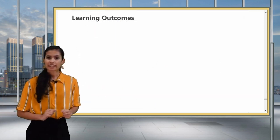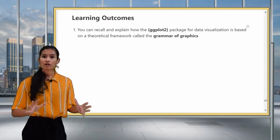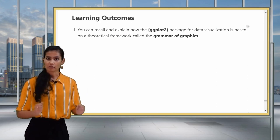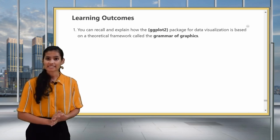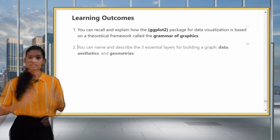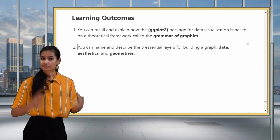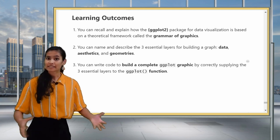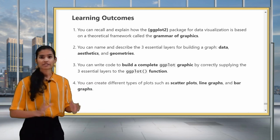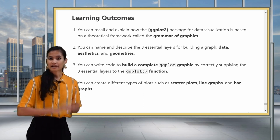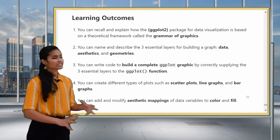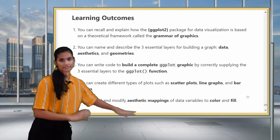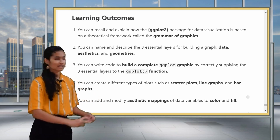So let's revisit the learning outcomes and see if we've met them all. First of all, you can understand the ggplot framework and how it relates to the grammar of graphics. You can name and explain what the three essential layers are. You can write code to build a complete plot using those three layers. You're able to create scatter plots, line graphs, and bar graphs. And you can add and modify different aesthetics like color, fill, and size. In the next lesson, we'll be looking more into detail on scatter plots.